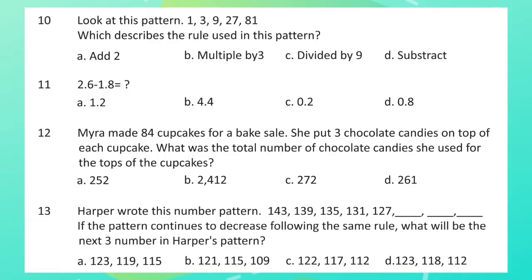Question 11: 2.6 minus 1.8 is equal to what? Question 12: Myra made 84 cupcakes for a bake sale. She put three chocolate candies on top of each cupcake. What was the total number of chocolate candies she used for the top of the cupcakes?